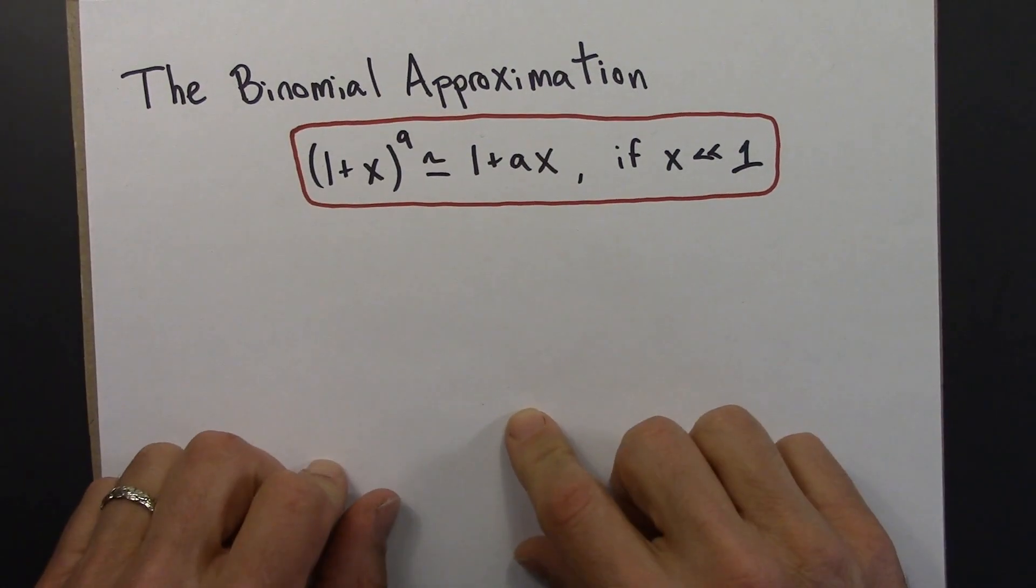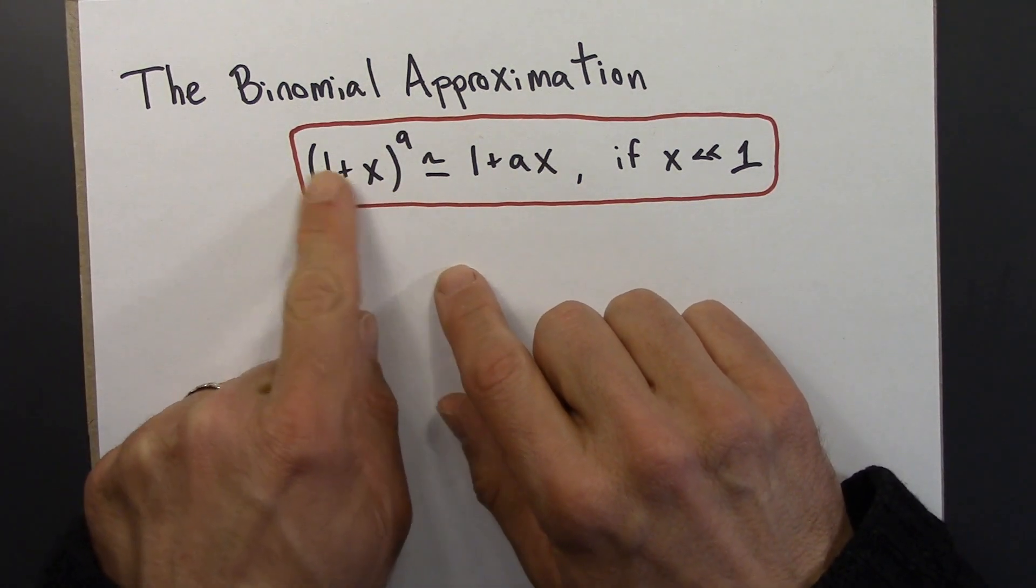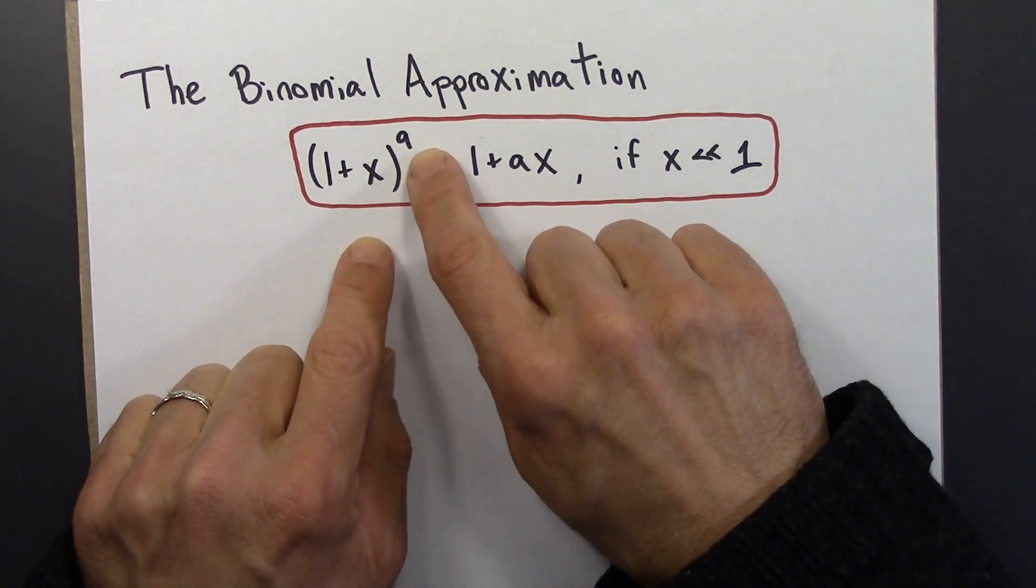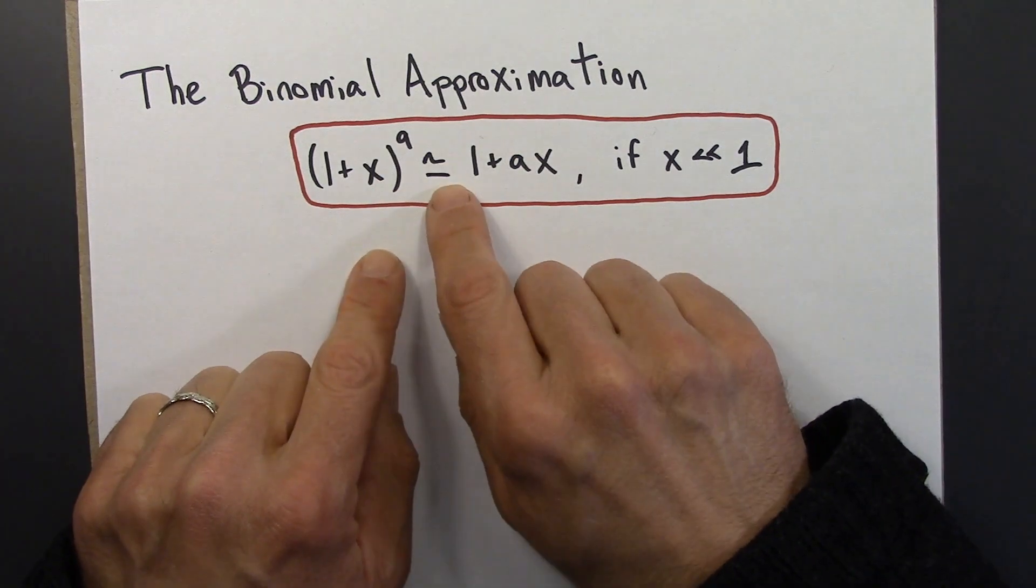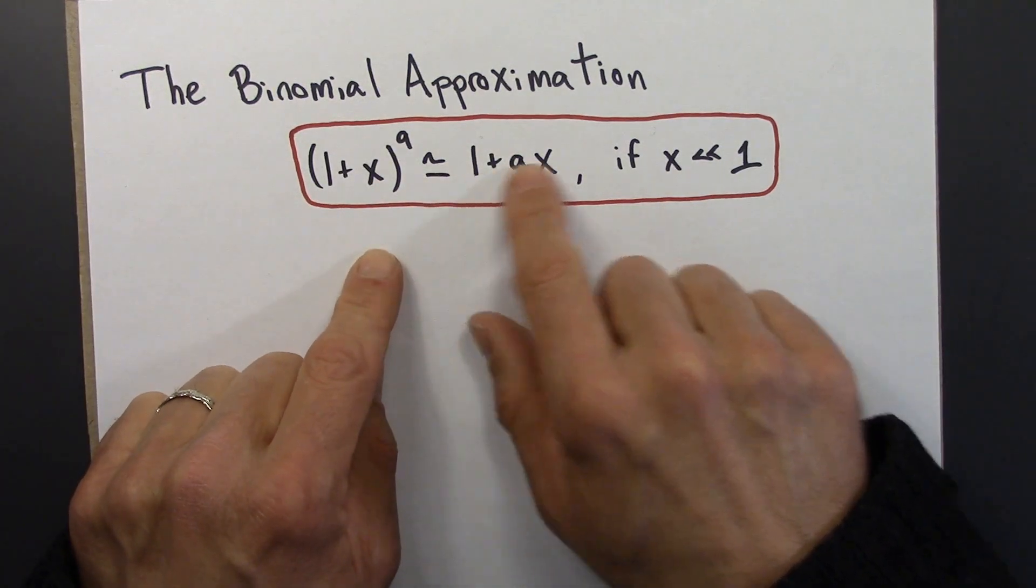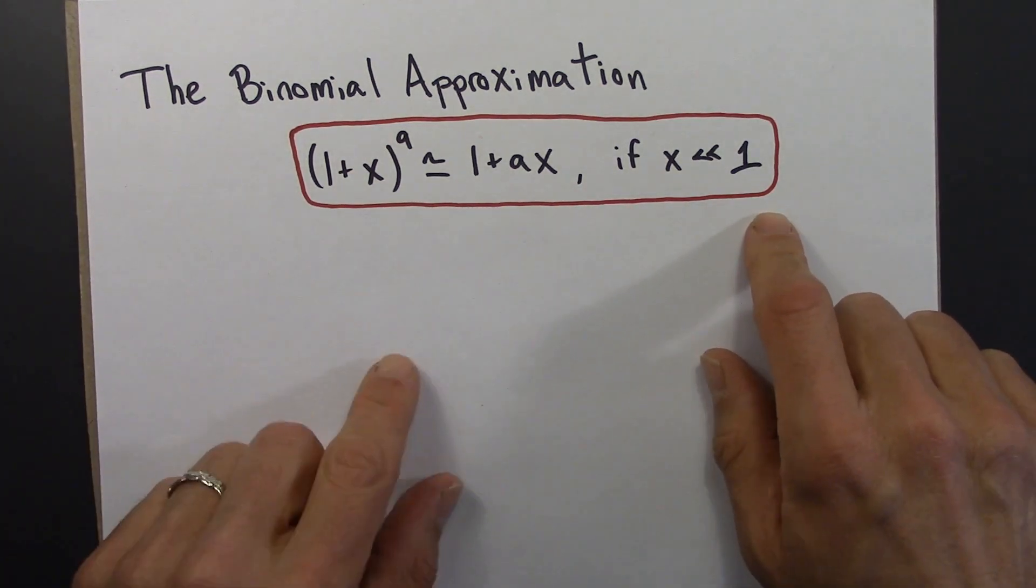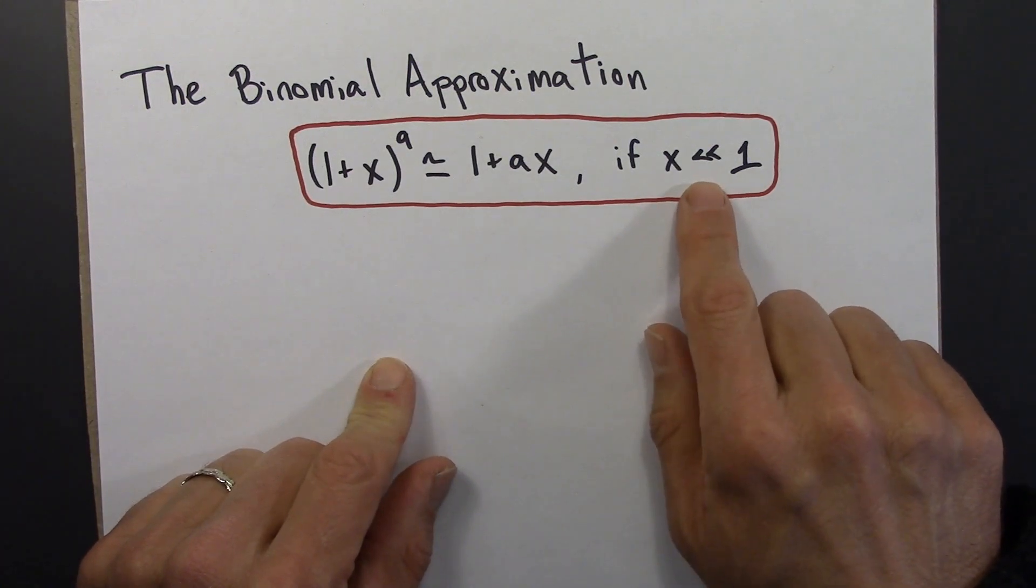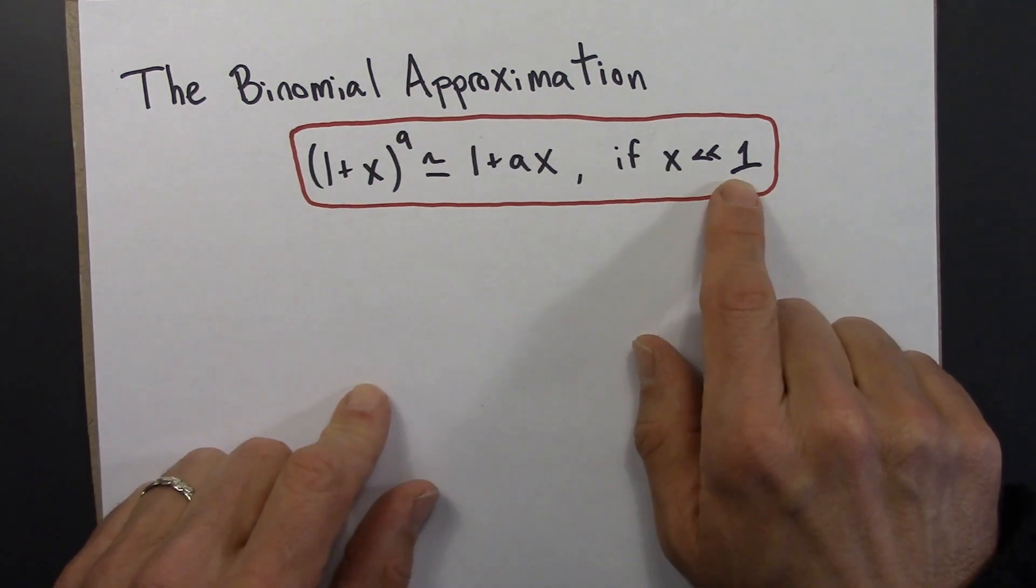So here's the binomial approximation. It says suppose we have an expression like this. This is a binomial, something plus something. In this case, 1 plus x, and it's raised to the a power. So it turns out that's very well approximated by this much simpler thing, 1 plus ax. This is a good approximation only if x is much less than 1. Two less than signs right next to each other means much less than 1.